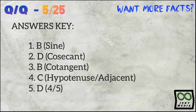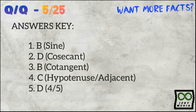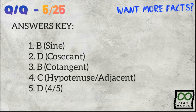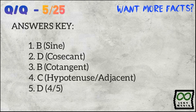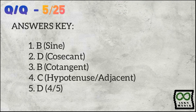Here is the answer key. Number 1: B — Sine. Number 2: D — Cosecant. Number 3: B — Cotangent. Number 4: C — Hypotenuse over adjacent. Number 5: D — 4 fifths.